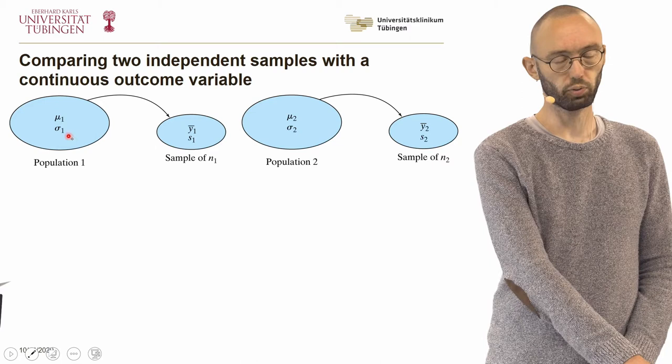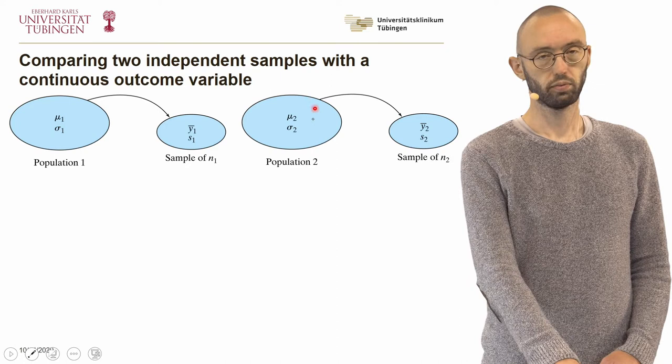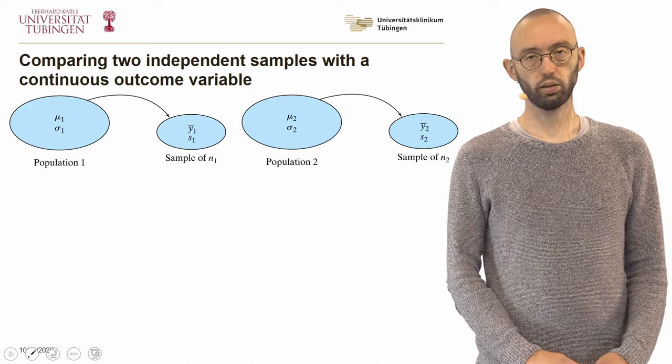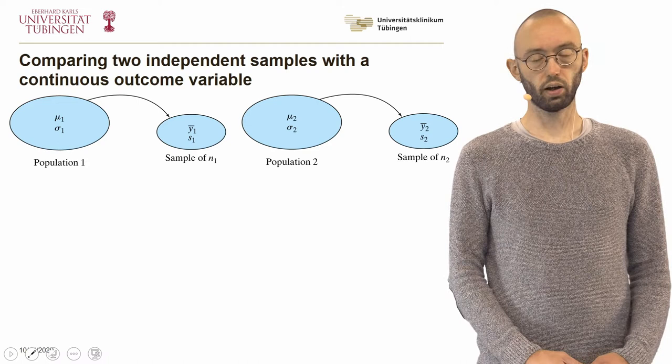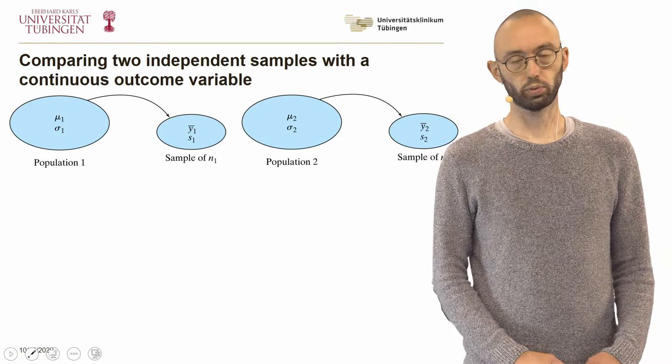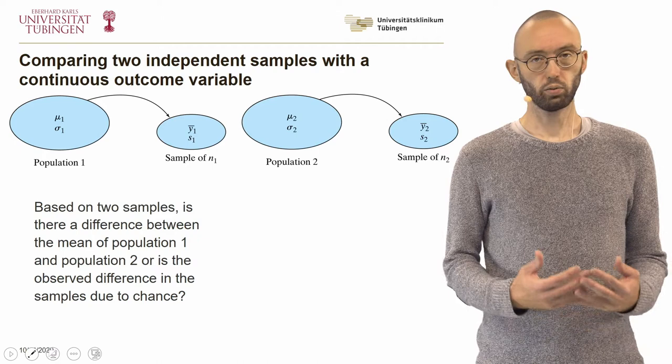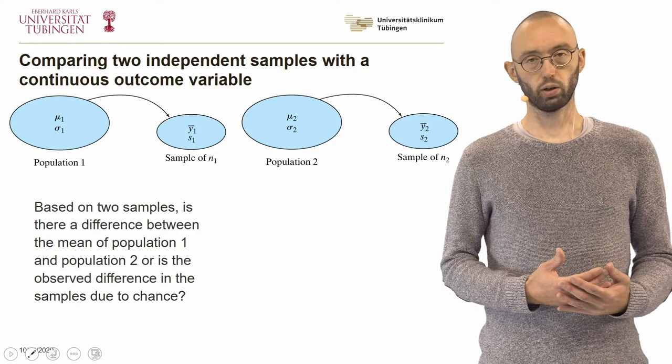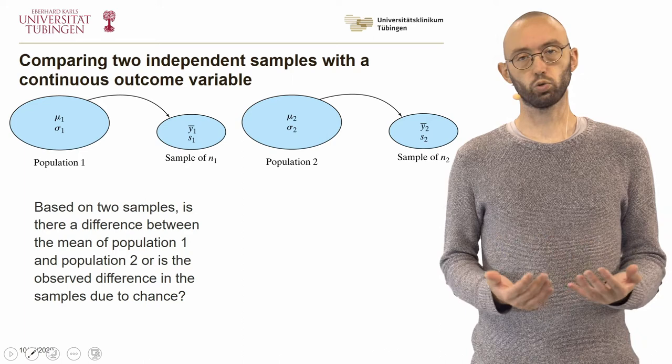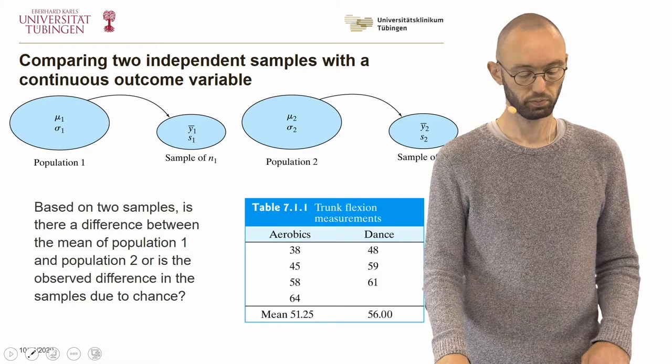So you have two populations, each with a population mean and a population standard deviation. You sample from each population randomly, and each sample has a sample mean and a sample standard deviation. The samples can be of the same size but do not have to be. Based on these two samples, can we confidently say that there is a difference in the mean of population 1 and population 2, or is the observed difference simply due to chance because of the variability inherent to the sampling process?